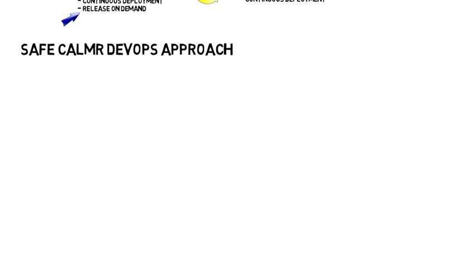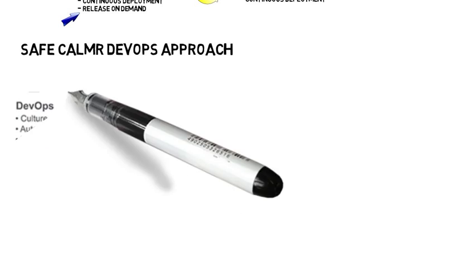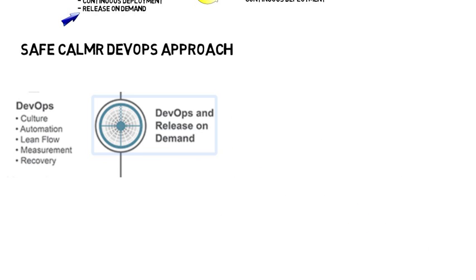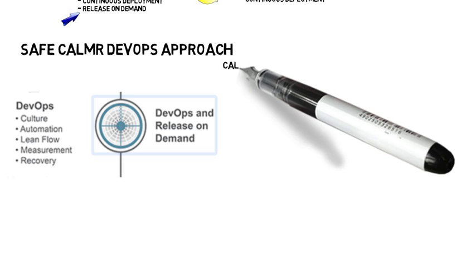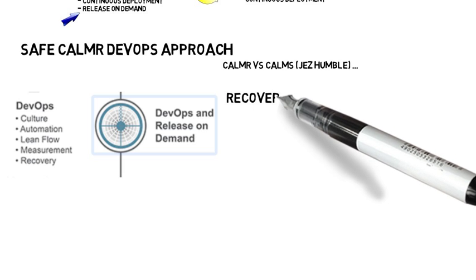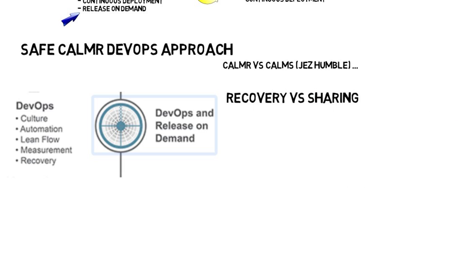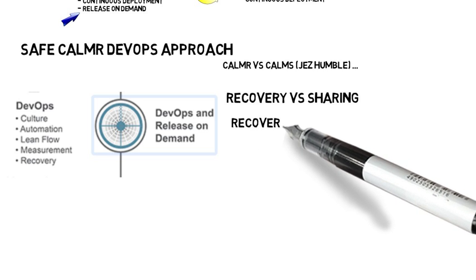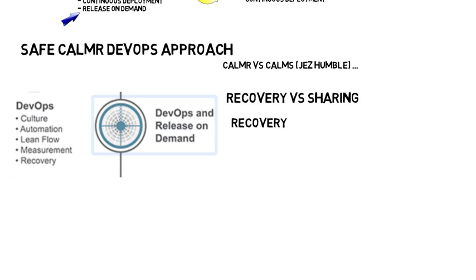Now let's take a look at the CALMER approach in Scaled Agile. They look at culture, automation, lean flow, measurement, and recovery. Compared to Jez Humble, who coined CAMS — culture, automation, lean, measurement, and sharing — recovery is clearly different from sharing in the Scaled Agile definition and approach.